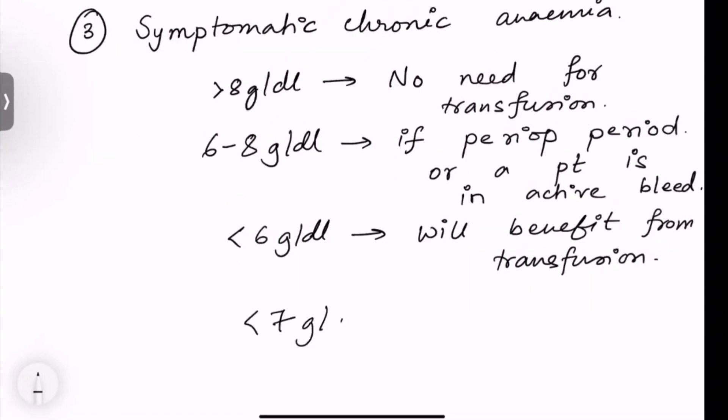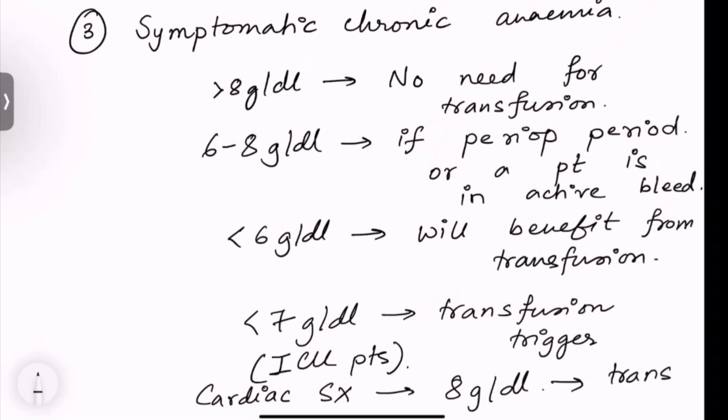If the patient's hemoglobin is less than 7 grams per deciliter, then you have to give blood transfusion. If the patient is in ICU, usually 6 to 8 grams per deciliter, you give blood only in perioperative period or if the patient is in active bleed. But if the patient is in ICU and 7 grams per deciliter, give blood. And if the patient is having 8 grams per deciliter but a cardiac surgery is going on, still you have to give blood.